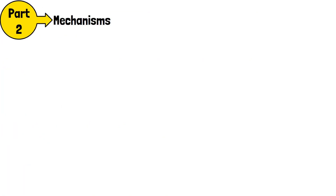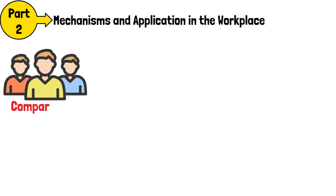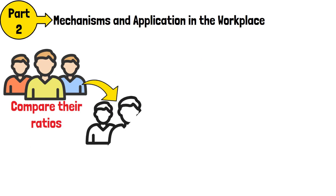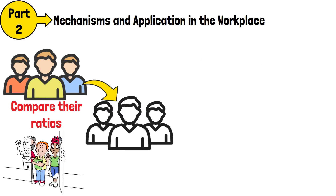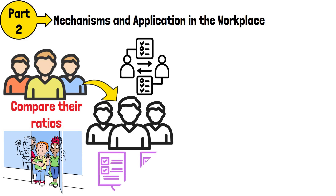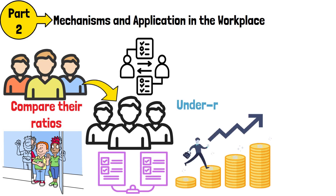Part 2: Mechanisms and Application in the Workplace. In practice, employees compare their ratios to referent others — colleagues in similar roles or industries. For example, an employee noticing a peer with comparable skills earning a higher salary might feel under-rewarded.